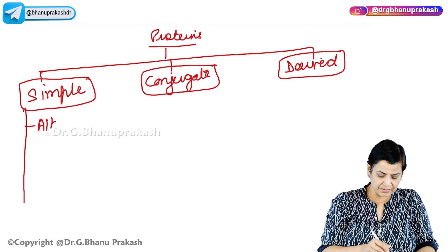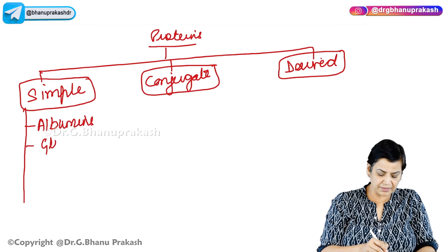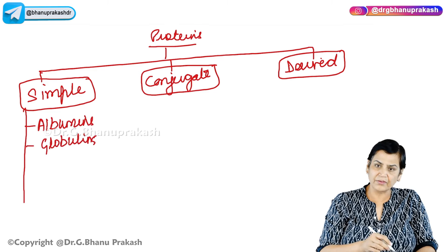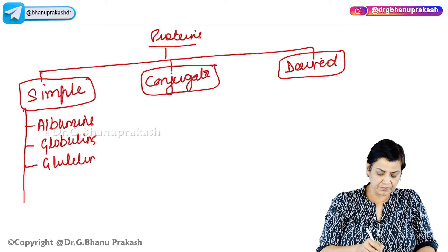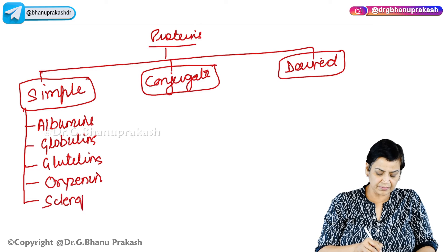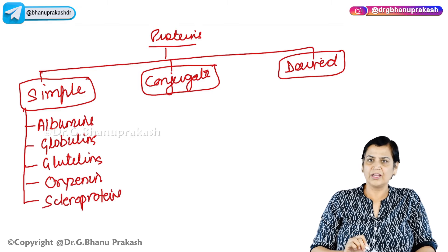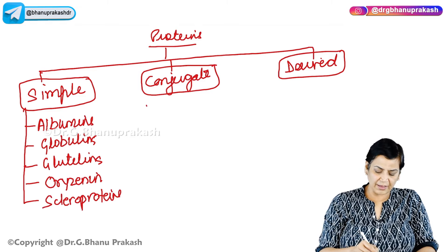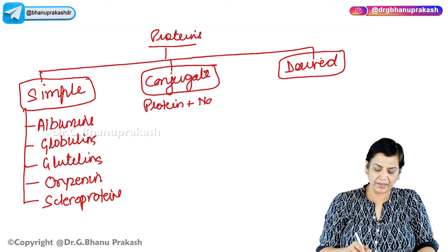Examples of simple proteins include albumins, globulins, glutelins, prolamins, keratin, and scleroproteins. Conjugate proteins have a protein part along with a non-protein part. Examples of conjugate proteins include hemoproteins — also called chromoproteins — where 'chromo' means color, with hemoglobin as an example.